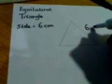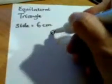So as we know, that means that all the sides of the equilateral triangle will be six centimeters long. So I'm just going to mark those on my diagram.